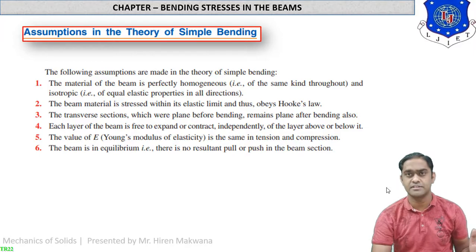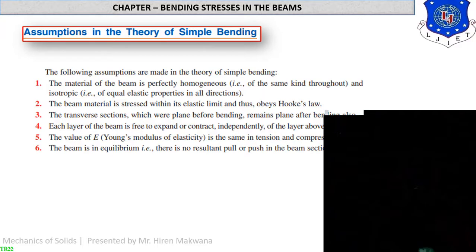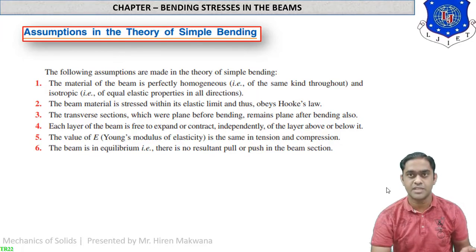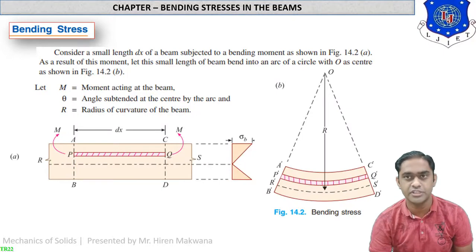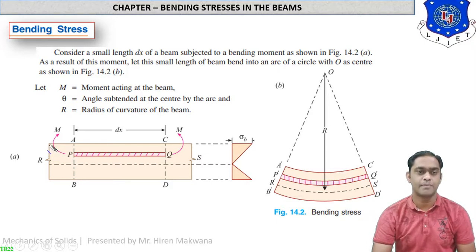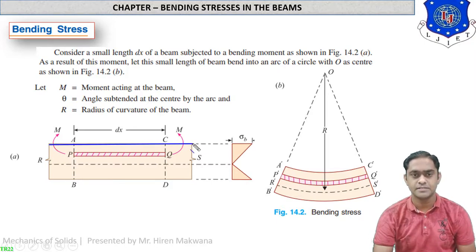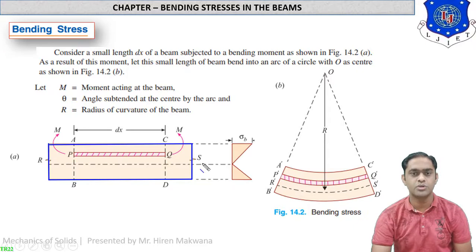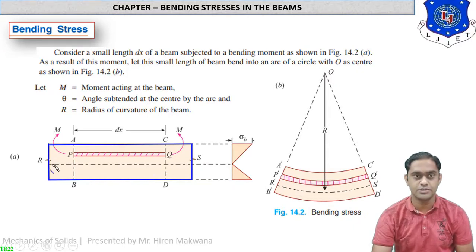We know that in simple stress and strain, stress is equal to force upon area, strain is equal to change in length upon original length. For stress we use sigma, and for strain we use epsilon. Let us concentrate on this figure for deriving the bending stress. Suppose this is the rectangular beam, and a cross section is drawn here. The name of the beam layer is RS, which is the neutral layer — also called the centroidal axis.